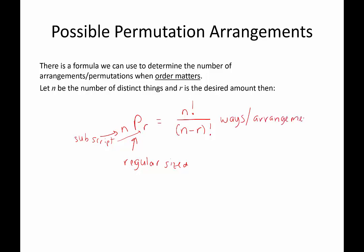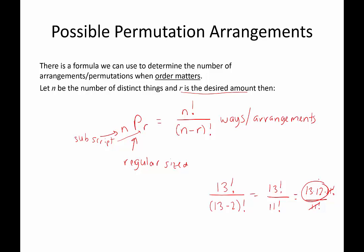If we think back to the troll dolls, I had 13 troll dolls and two special spots. That would be 13 factorial divided by (13 minus 2) factorial, which is 13 factorial divided by 11 factorial. That expands to 13 times 12 times 11 factorial over 11 factorial, and the 11 factorials cancel, leaving us with 13 times 12. So you can see the formula does make sense. If you need a review on factorials, there is a previous video where I go over simplifying factorials.